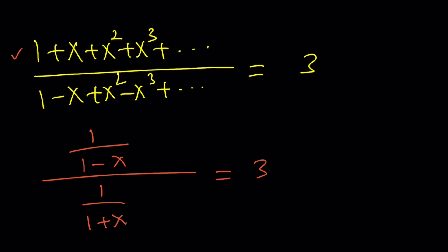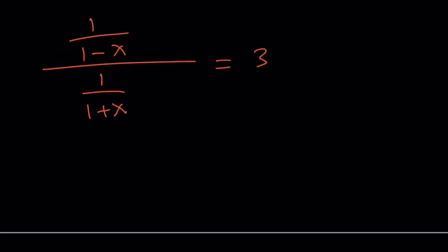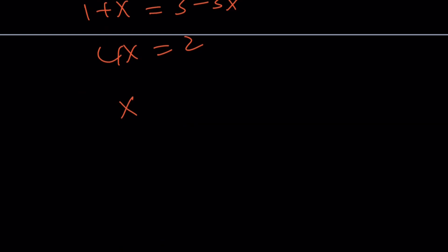And if you flip the second one and multiply, you're going to get 1 plus x divided by 1 minus x equals 3. And if you cross multiply, you get 1 plus x equals 3 minus 3x. Put the x on the same side. 4x equals 2. x equals 1 half.